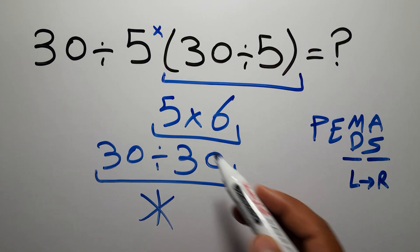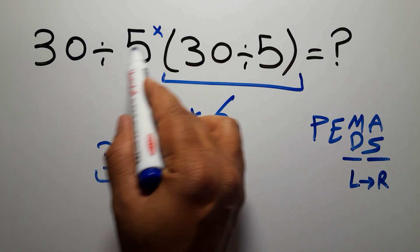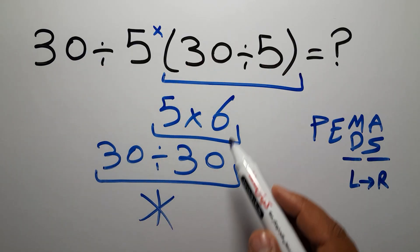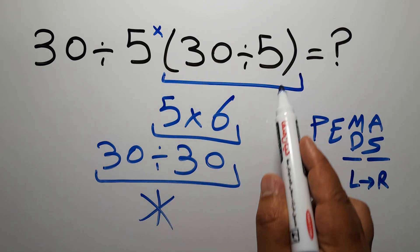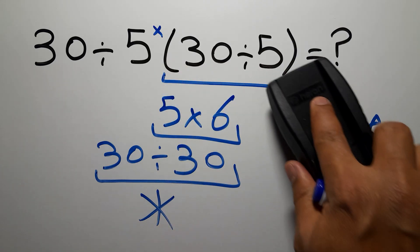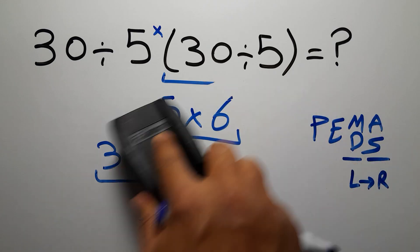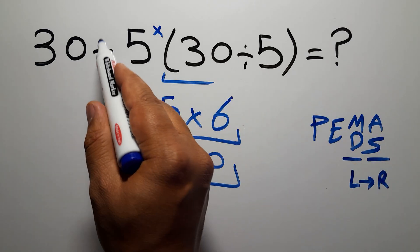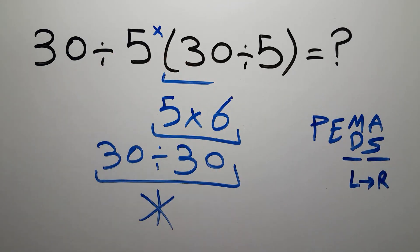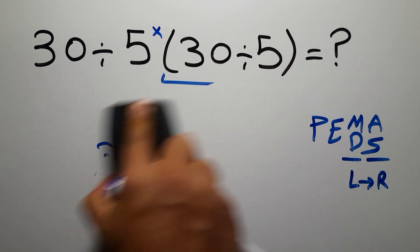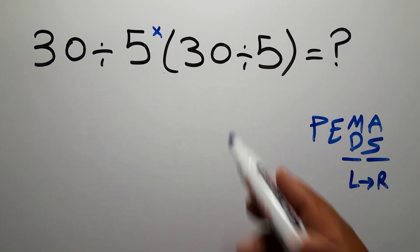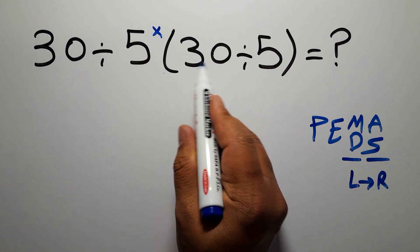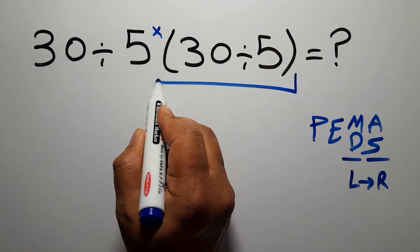So we have one division, one multiplication, and this parentheses. According to PEMDAS, first we have to do this parentheses and then this division, not this multiplication. So first, this parentheses: 30 divided by 5 gives us 6.